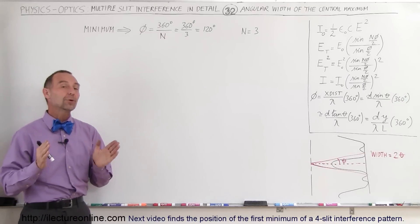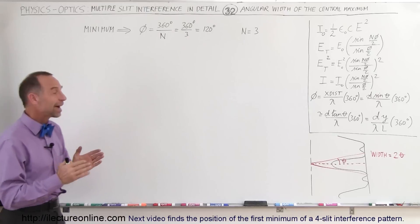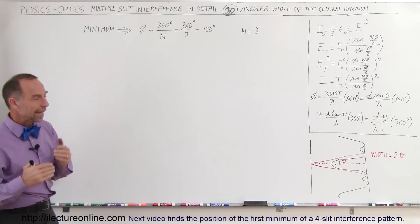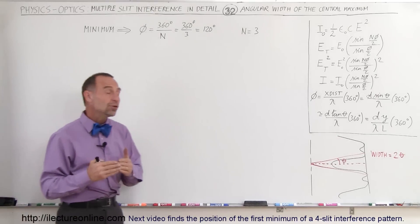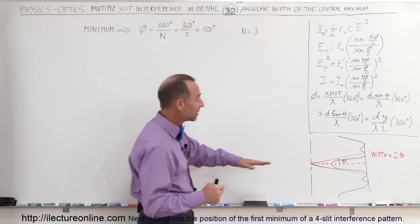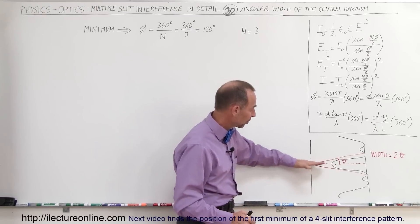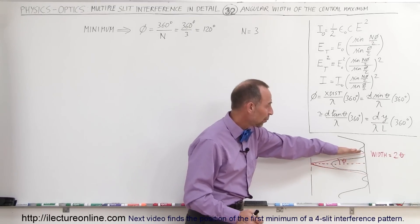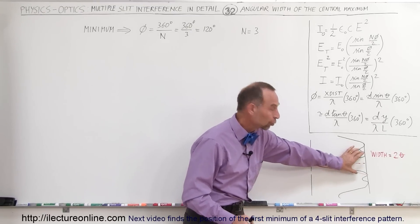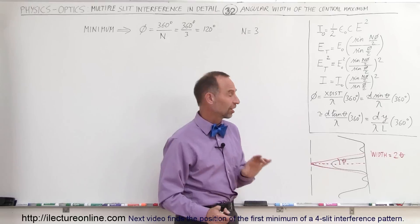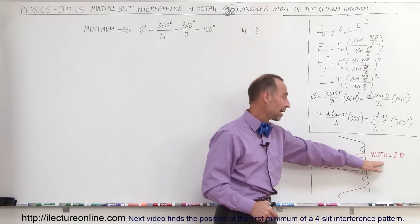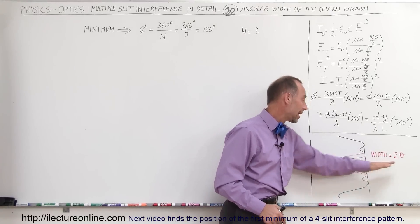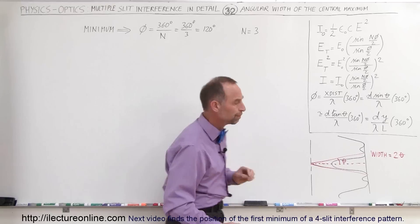Welcome to our lecture online. Here we're going to try to find the width of the central maximum. Usually the way we do that is we find the angular distance from the central maximum to the minimum on one side, and we double that to get the total width of the central maximum. So the width of the central maximum is two times the lookup angle to the first minimum.